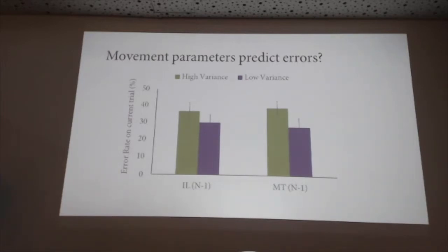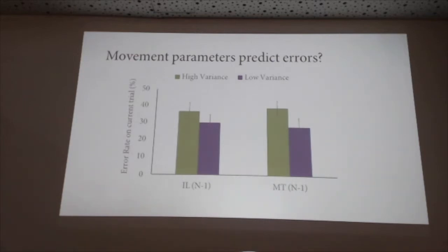Looking at movement time variability, we see an even bigger effect that does reach statistical significance. Still ongoing in terms of data collection, so that could change, but these patterns seem relatively strong already. The suggestion is that variability we can see in a movement path can be used to infer how likely it is that somebody is going to make an error — perhaps how likely it is that they're not entirely focused on the task right now.